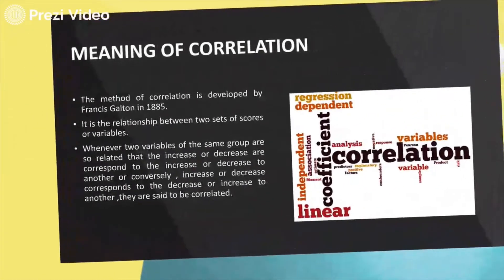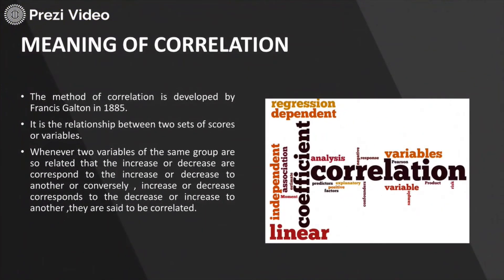Let us first try to understand what is correlation. This method was actually developed by the scientist Francis Galton in the year 1885. As the term indicates, we are actually assessing and evaluating the relationship between two variables — for example, variable X and variable Y.